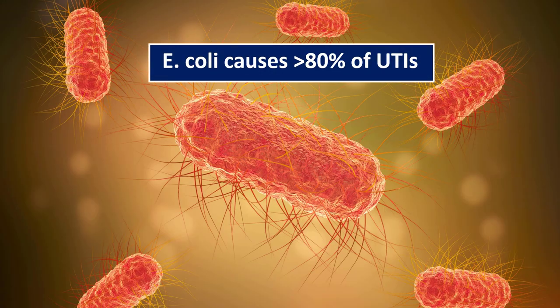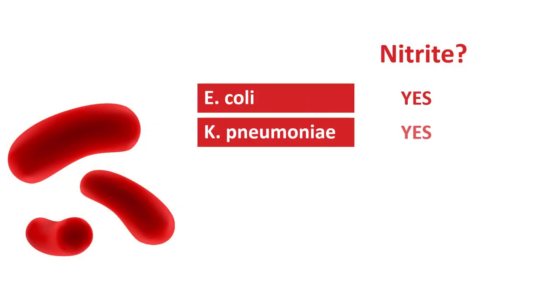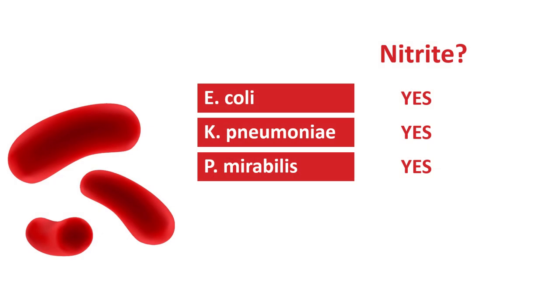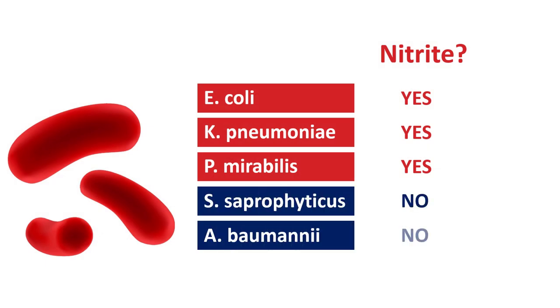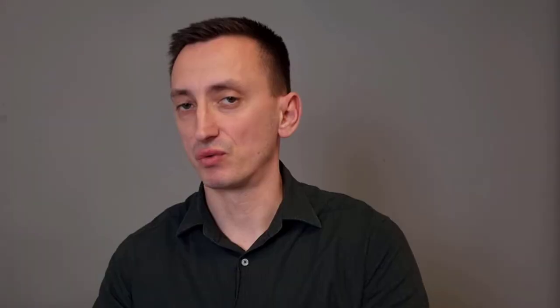Number one: not all bacteria produce nitrites. E. coli, by far the most common cause of community-acquired UTIs, does produce nitrites. So do Klebsiella pneumoniae and Proteus mirabilis. But for example, Staphylococcus, the second most common cause of community-acquired UTIs, doesn't produce nitrites. Many hospital-acquired bacteria like Pseudomonas or Acinetobacter don't produce nitrites either. So this makes nitrites somewhat less reliable.